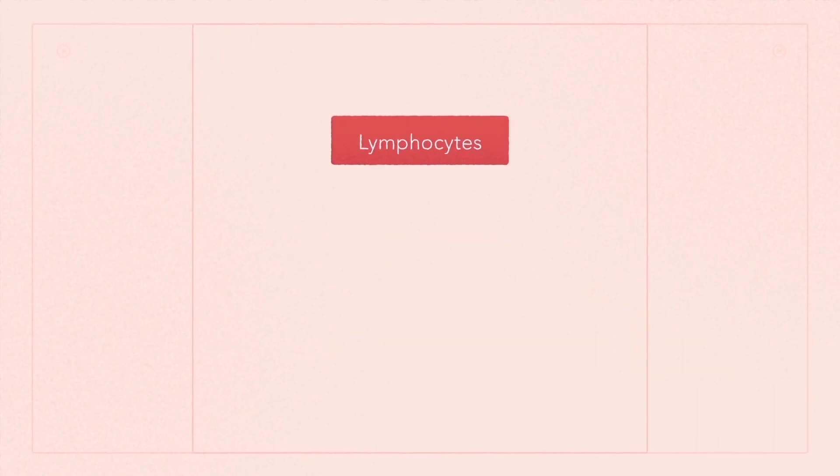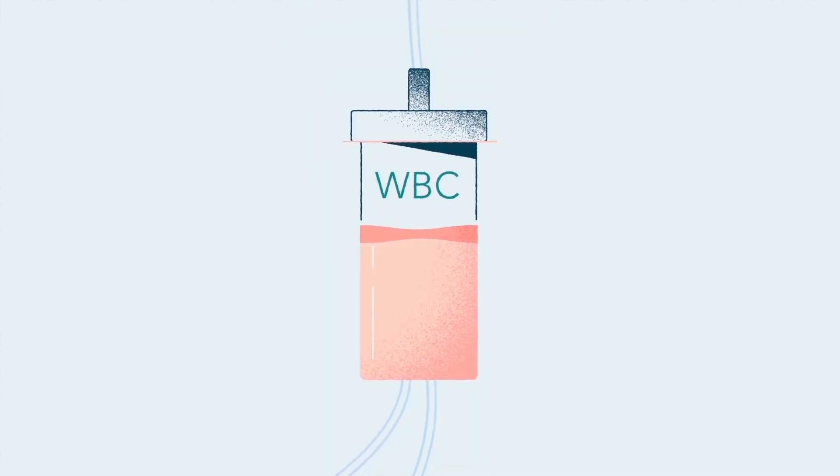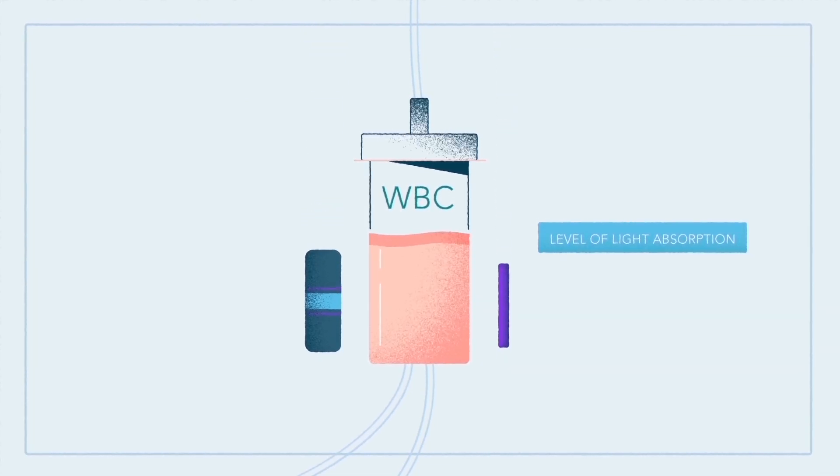Here you get a three-part differentiation of the white blood cells, allowing measurement of lymphocytes, monocytes and granulocytes. When the hemoglobin is released from the red blood cells, it's possible to measure it by the absorption of light in the measuring chamber. The level of light absorption correlates to the hemoglobin value.